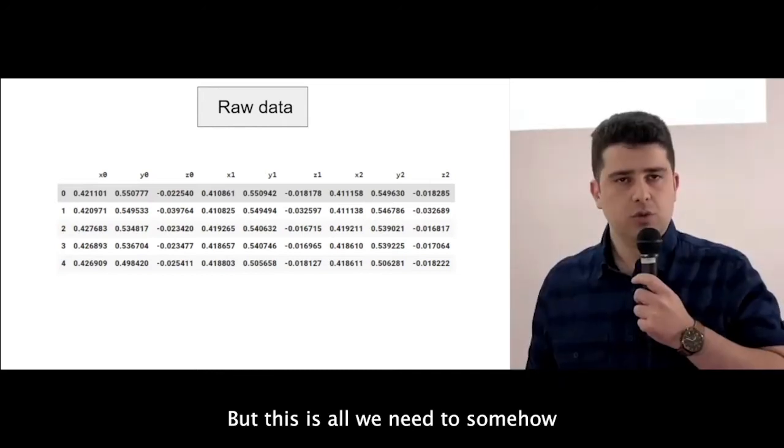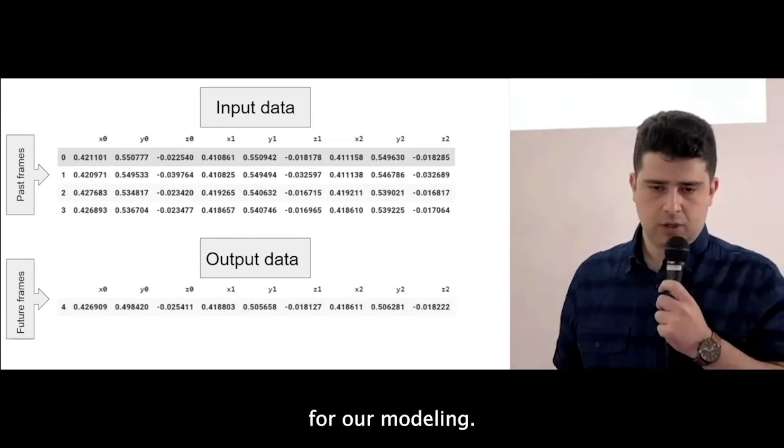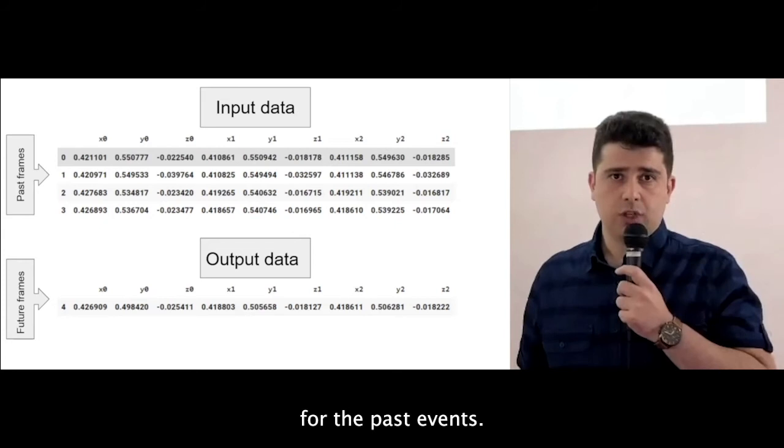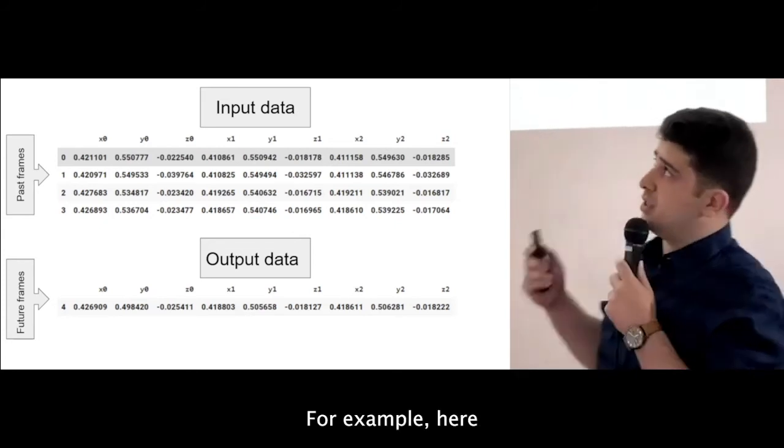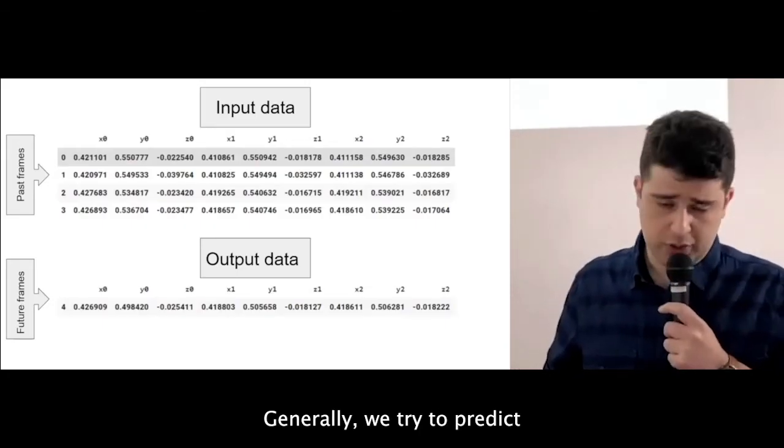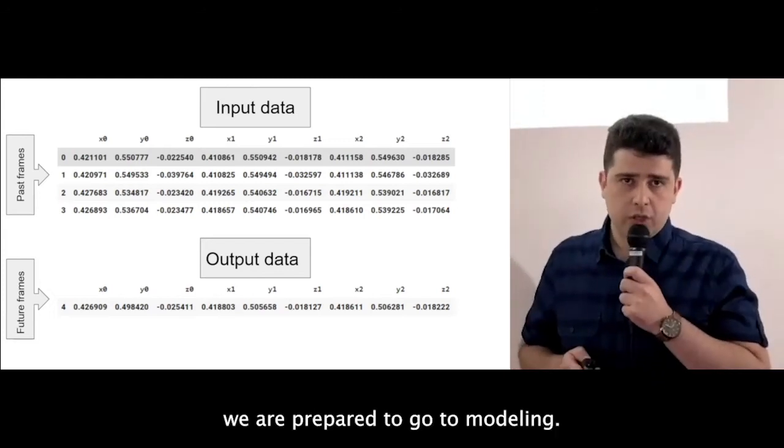But this is all we need to somehow change the data to the input and output that we would like to have for our modeling. Basically, as you can see, our input can be the data for the past events, for example, here, past four events, the frames that we had, and we could predict the next frame. And that can be a hyper parameter. So we can have more, look more in the past, and we can predict more in the future. Generally, we try to predict just one in the future. After having our data, then we are prepared to go to modeling.